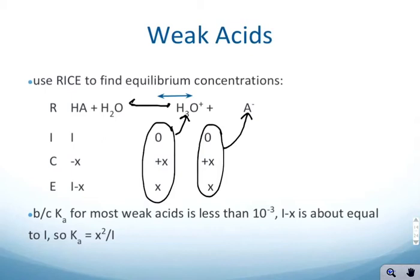So anytime that you're dealing with a weak acid, if you want to know what are the equilibrium concentrations of that acid, of the acid still together, the hydronium ion, and the conjugate base, you have to use what's called, you don't have to use a RICE table, but it makes it a lot easier to calculate everything using a RICE table. So what is a RICE table?